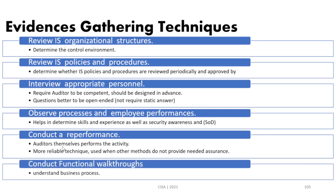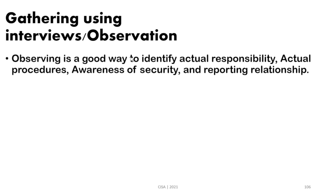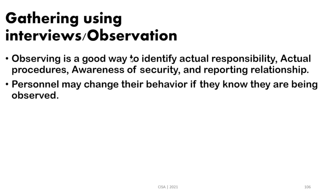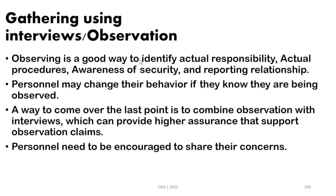A functional walkthrough will help us understand business processes. All of these are evidence gathering techniques proportional to the nature of the audit mission. Regarding interviews and observation: observation is a good way to identify responsibilities, awareness, and reporting relationships, and can determine whether segregation of duties exists. However, personnel may change their behavior when they know they are being observed. Combining observation with interview can provide higher assurance. Personnel should be encouraged to share their concerns, and open-ended questions are best practice.